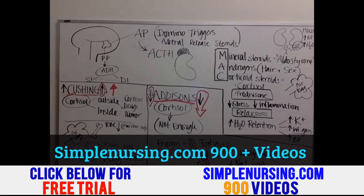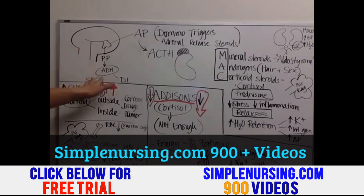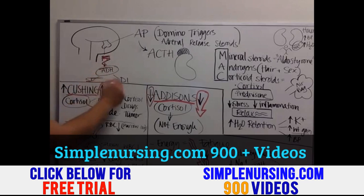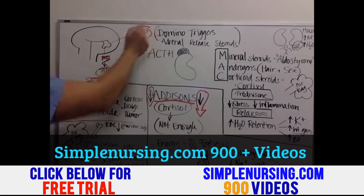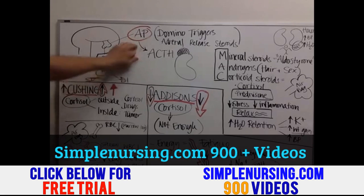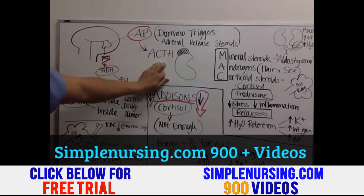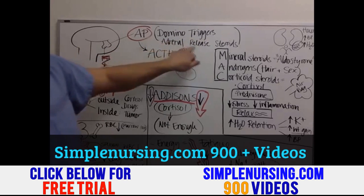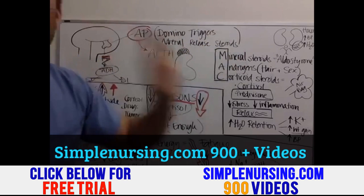I did lectures on the posterior pituitary — how it controls ADH, SIADH, and DI — but we're not talking about that here. What we are talking about is your anterior pituitary, which shoots off a hormone called ACTH. It's just a domino hormone that triggers adrenal release of steroids.